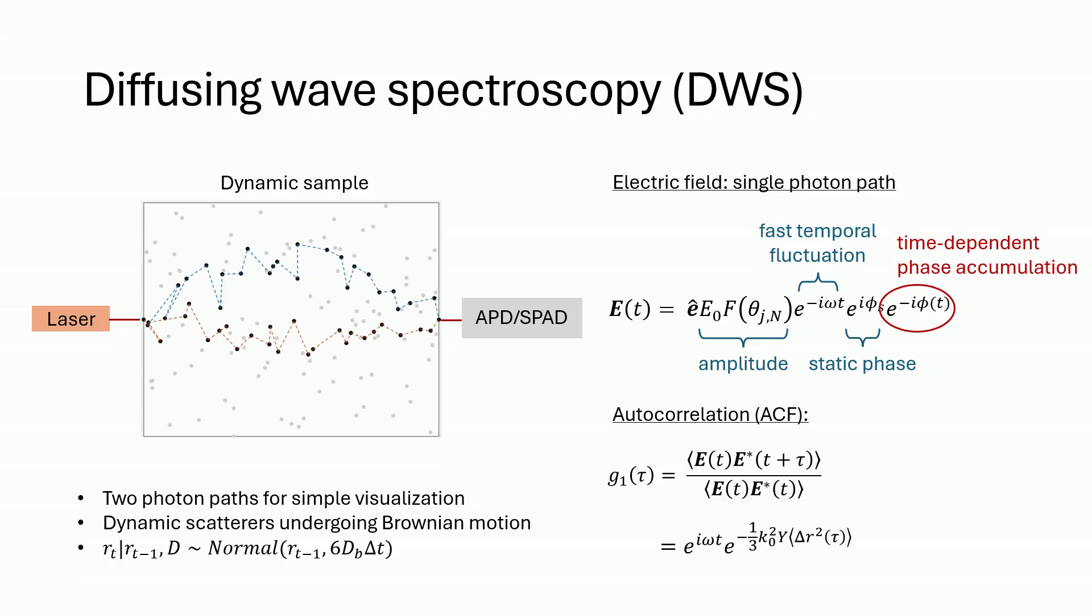By taking the autocorrelation of this, the derivation details of which are now shown here, we see that it decays exponentially, with a rate proportional to the diffusion coefficient.